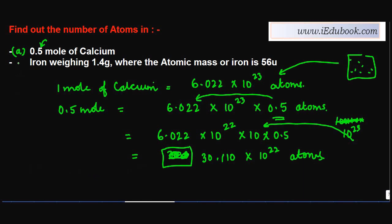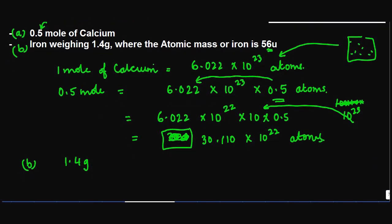Let's take the second one, which is (b). Iron weighing 1.4 grams. They're asking how many atoms are contained in this 1.4 gram. The atomic mass of iron is 56u or 56 grams. So in 56 grams you have 6.022 × 10^23 atoms.